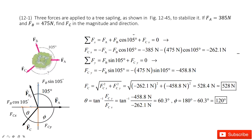For Fb, we can project it into two components: Fb sine theta and Fb cosine theta. For the next vector Fc, we also project it into two components: Fcx and Fcy.